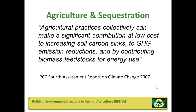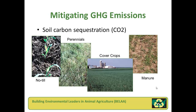Agricultural practices collectively can make a significant contribution at low cost to increasing soil carbon sinks, to greenhouse gas emission reductions, and by contributing biomass feedstocks for energy use. This quote is from the 2007 UN Intergovernmental Panel on Climate Change report, which reviewed worldwide scientific literature and singled out soil carbon as the most promising method for agriculture to sequester carbon. Farms and ranches can sequester carbon through conservation tillage or no-till, switching from annual to perennial crops, using cover crops, or applying organic materials such as manure or compost.